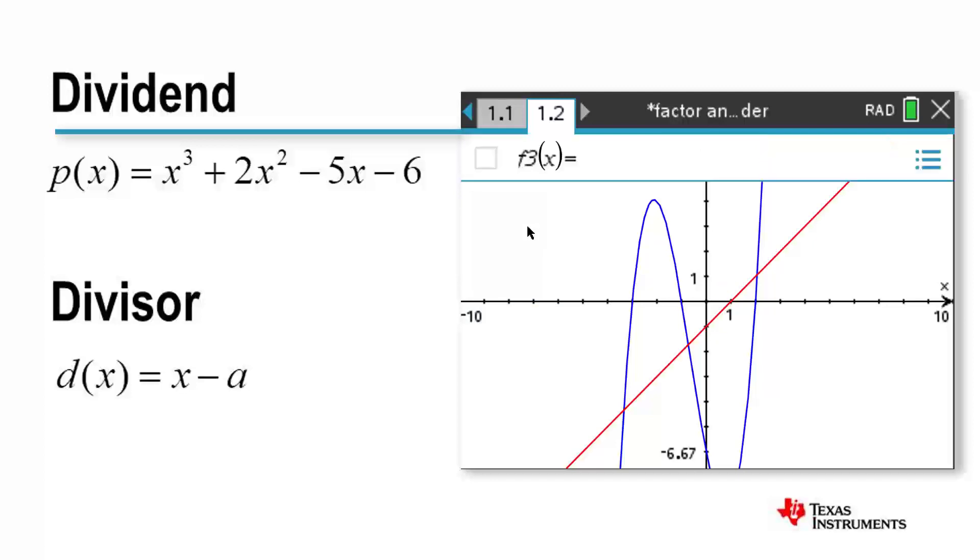Now we want to see what happens when you divide one polynomial by another. The result, as you can see, is a somewhat unusual graph. It certainly doesn't look like another polynomial. So, I'll try changing my divisor.